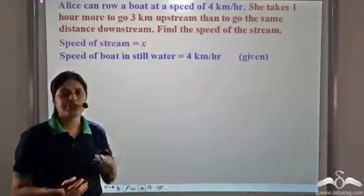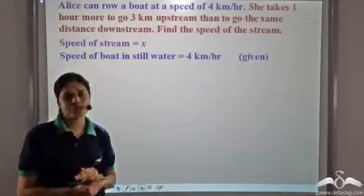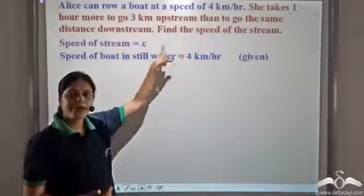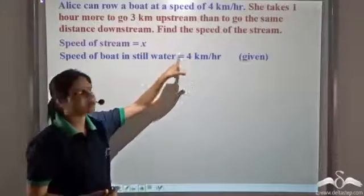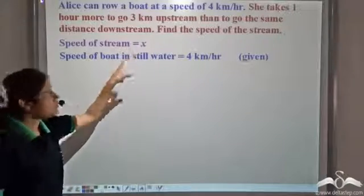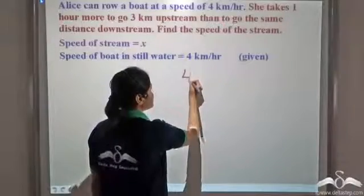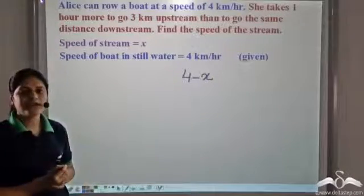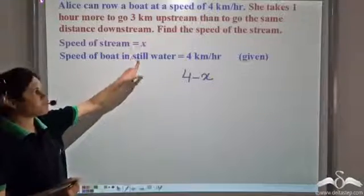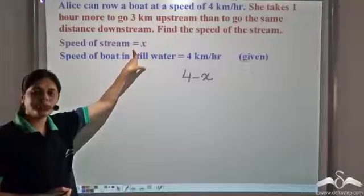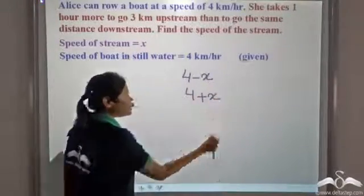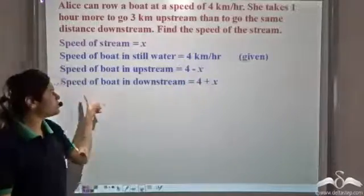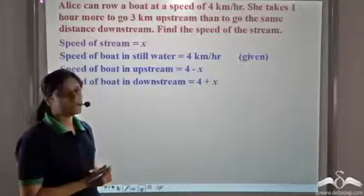When Alice travels upstream, she is going against the stream. So when she moves upstream, her speed is equal to 4 minus x — that is her speed in still water minus the speed of the stream. When Alice moves downstream, her speed will be the speed of the boat in still water plus the speed of the stream, which is 4 plus x. So speed upstream is 4 minus x and speed downstream is 4 plus x.